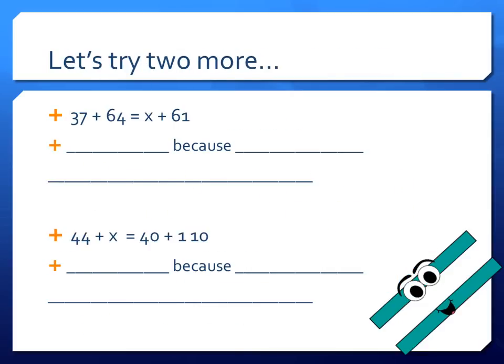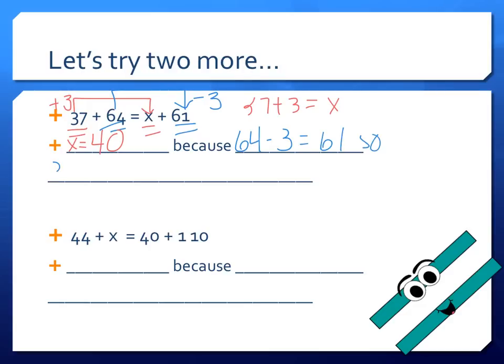Let's try two more examples. Try to think of the relationships on your own this time. If I compare 37 to x, so now I'm going to go from 64 to 61. So from 64 to 61 I'm going to subtract 3. The opposite of subtracting 3 is adding 3. So 37 plus 3 is going to equal x. That makes x 40. So x equals 40 because 64 minus 3 is 61. So 37 plus 3 equals x balances the equation.